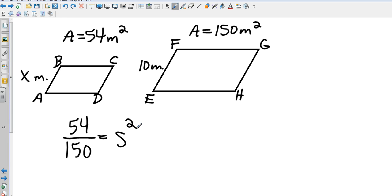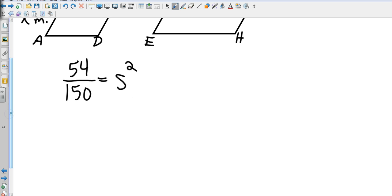And so looking at 54 and 150, there's no perfect square. 54 is not a perfect square, 150 is not a perfect square. So look to see if you can reduce your fraction. In this case, it appears we can reduce it by 6s, and so 54 divided by 6 is going to be 9, and 150 divided by 6 is going to be 25. So now I've got some perfect squares when I square root both sides.